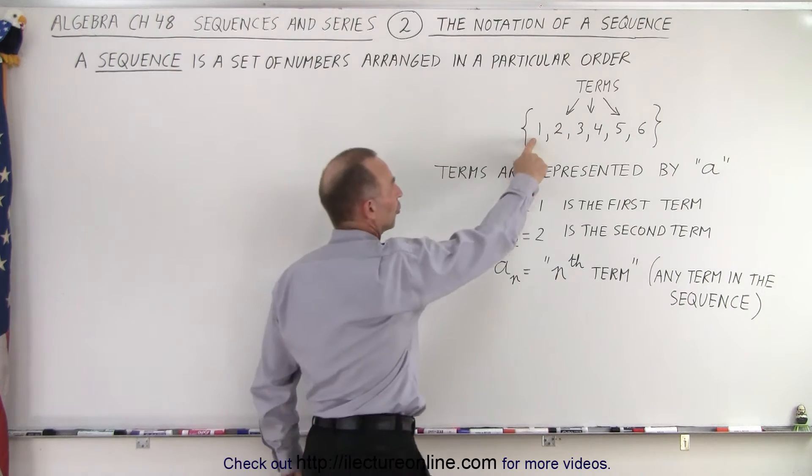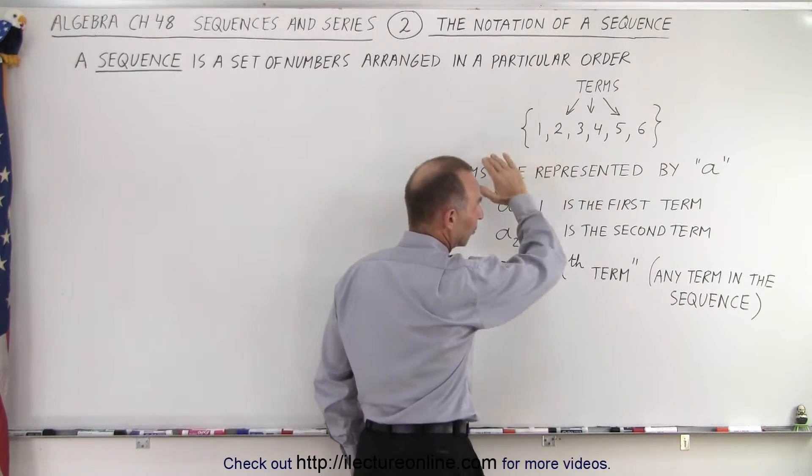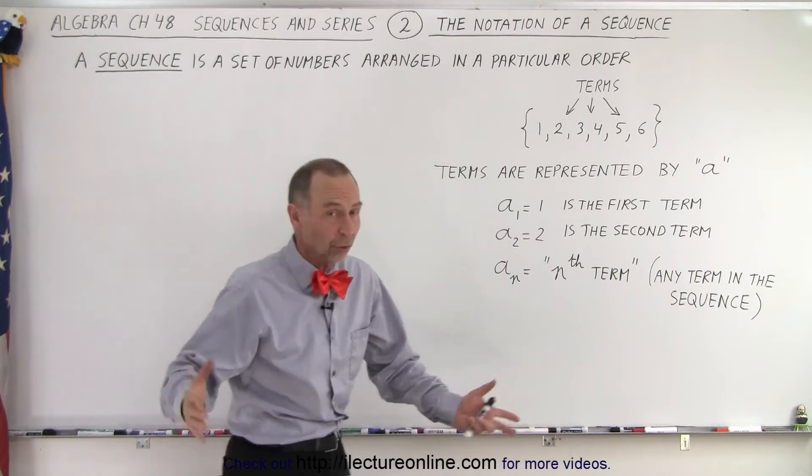So we have the first term, the second term, the third term, and so forth. This is obviously a finite sequence because there's only six terms.